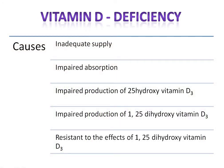The causes of vitamin D deficiency include: inadequate supply — either in the diet or inadequate exposure to sunlight; impaired absorption due to intestinal problems affecting fat absorption; impaired production of 25-hydroxyvitamin D (a liver-related problem); impaired production of 1,25-dihydroxycholecalciferol (a kidney-related problem); or resistance at the receptor level.